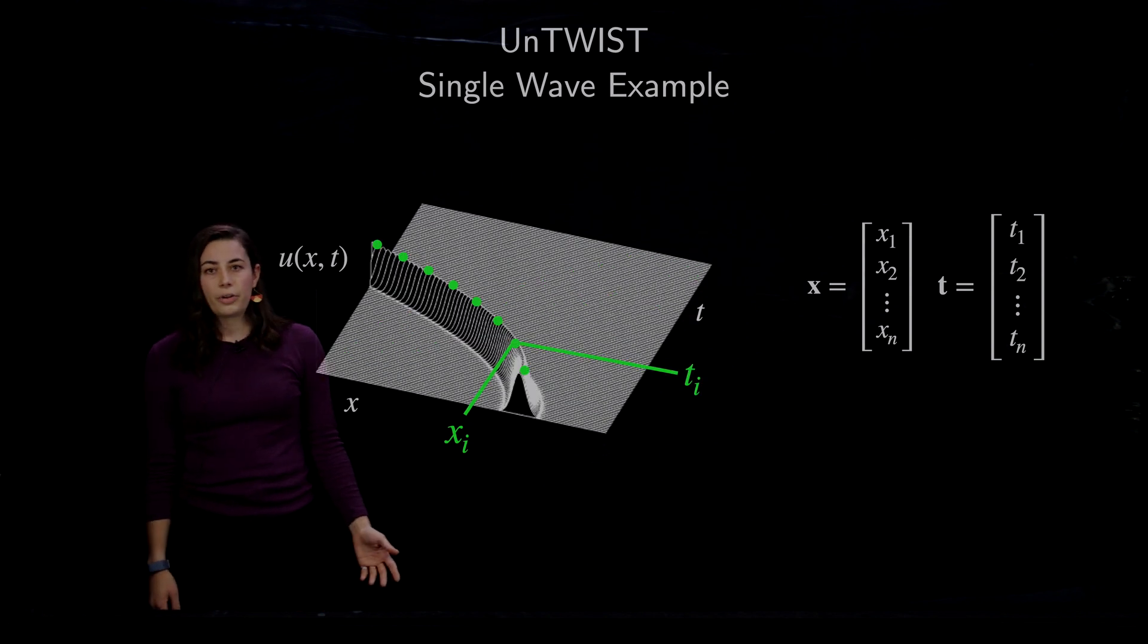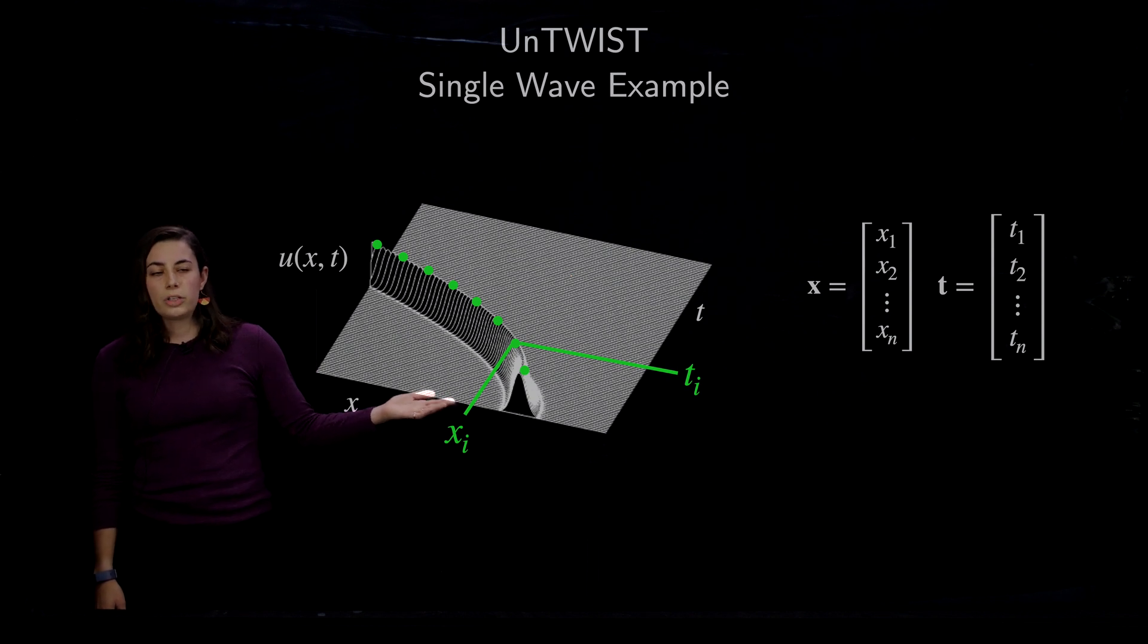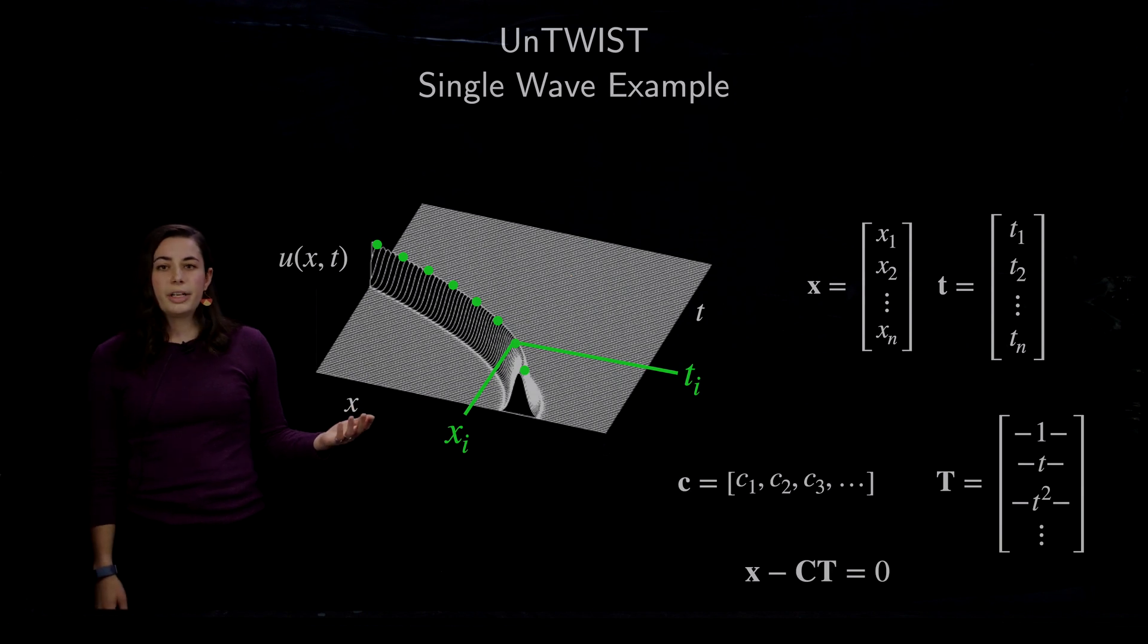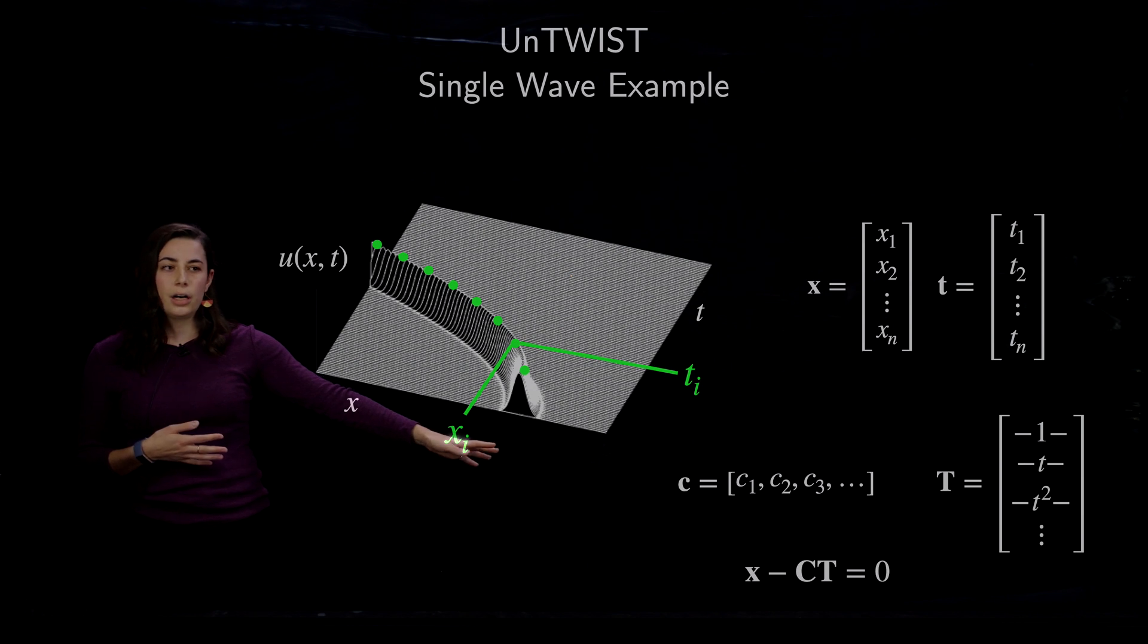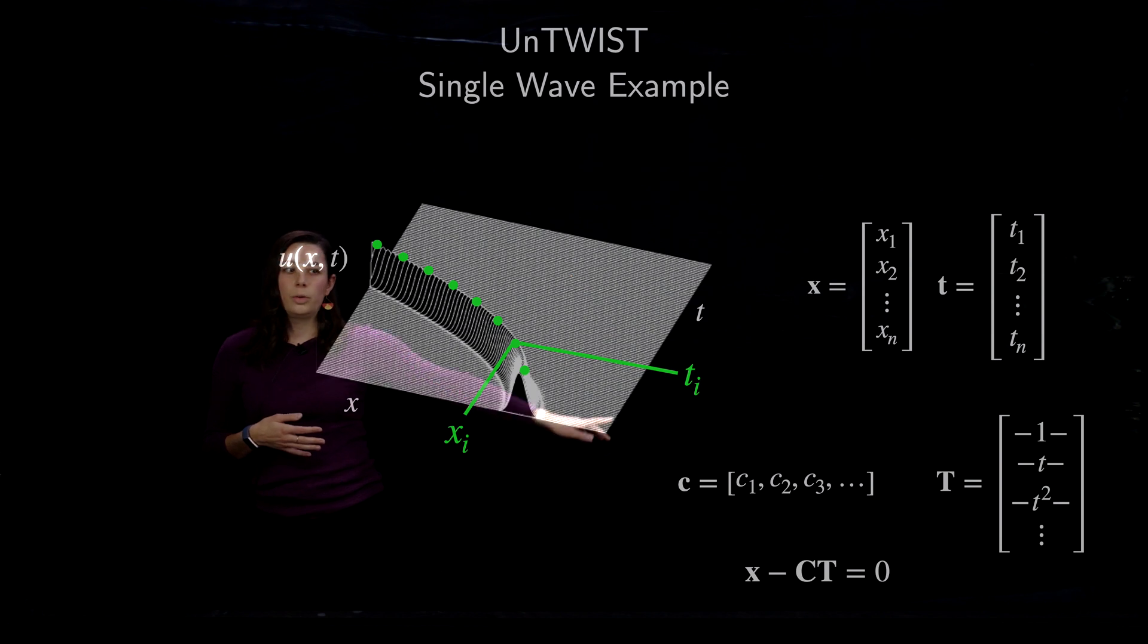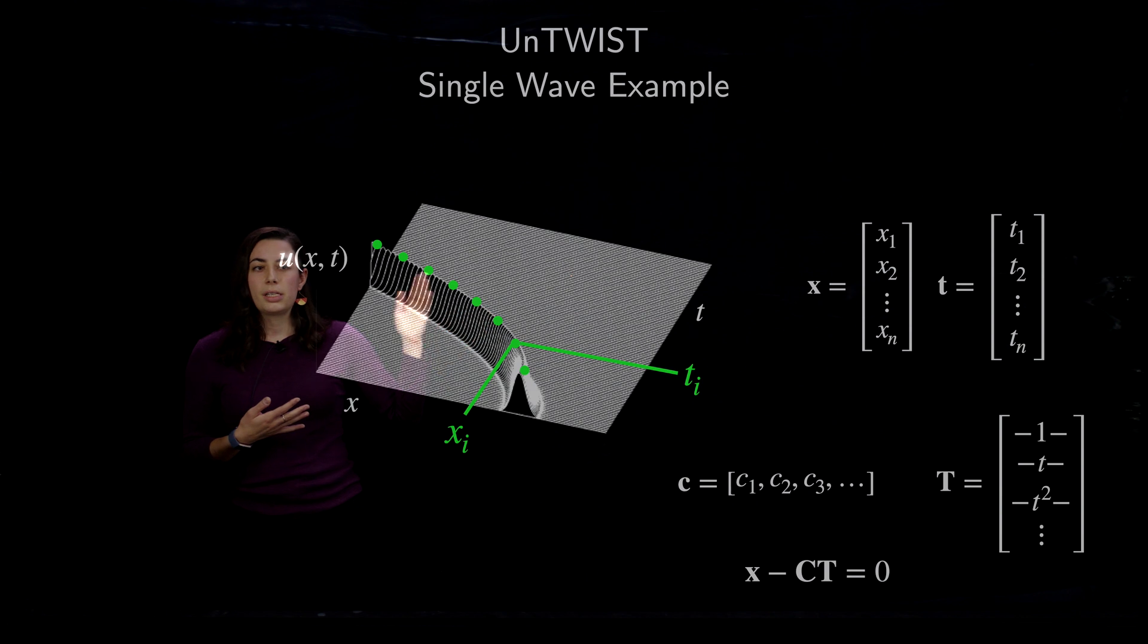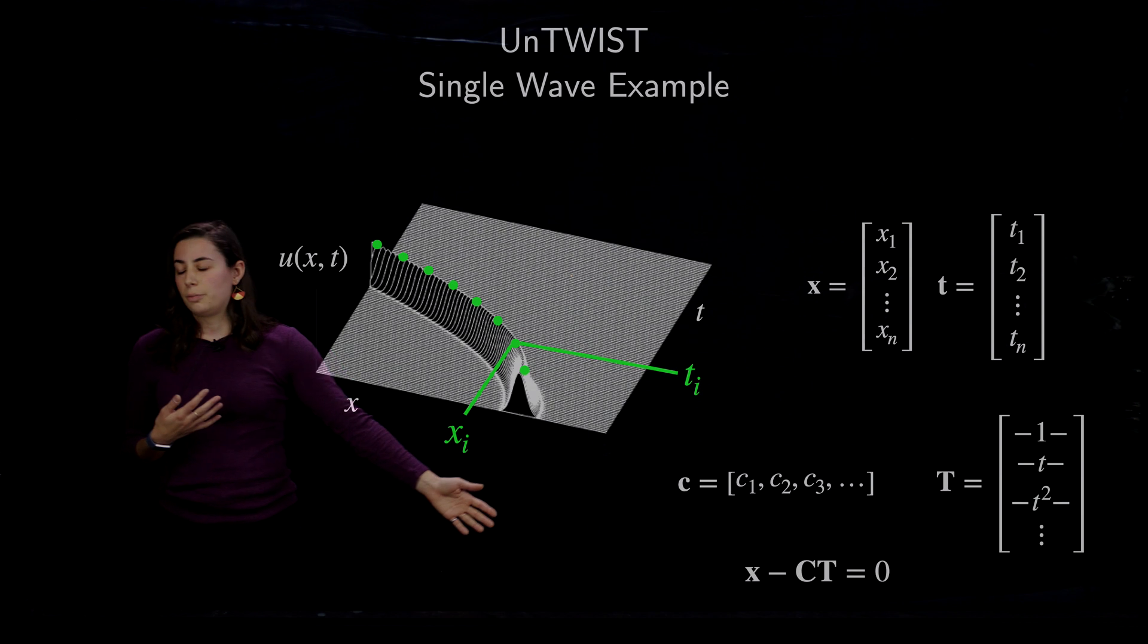To make it a little bit more complicated, what happens if we have a wave that has a non-constant speed? So a way that we can do this is, again, find the wave peak points, X and T. And now we need to provide some kind of information of what we're searching for. So providing some candidate model library which contains any functions that we want, linear or non-linear, will allow us to use C to find the coefficients of those functions that correspond to the models that we've input to find a function that represents this wave speed. So then we can also solve this using X minus C T, which is solved by a simple backslash.